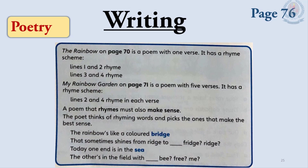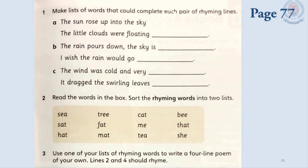A poem that rhymes must also make sense. The poet thinks of rhyming words and picks the ones that make the best sense. For example: 'The rainbow's like a colored bridge, that sometimes shines from bridge to reach' — here 'bridge' and 'reach' rhyme. Next lines: 'Today one end is in the sea, the other's in the field with me.' The words 'sea' and 'me' rhyme, and other rhyming words include 'be' and 'free.'